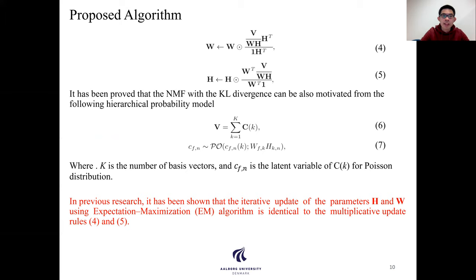Additionally, in previous research, it has been proven that NMF with KL-divergence can be also motivated from the following probability model by using Poisson distribution, where K is the number of basis vectors, and GK,n is the latent variable of CK for Poisson distribution.